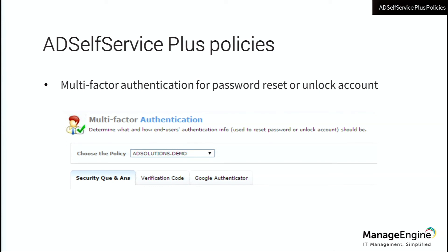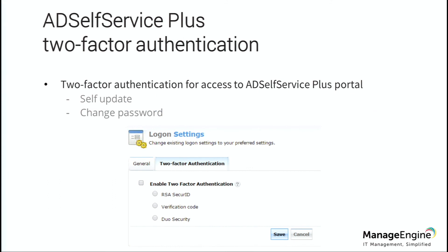This security is for password reset and unlock. If I'm going to allow the user, after they've logged into their machine, to go into the portal to gain access, we now have additional multi-factor authentication — brand new. This would be if they want to do a self-update or change their password. We're allowing RSA, verification code, SMS, email, and Duo Security. When are we going to merge them? Very soon — it's on the roadmap. This will overlap at some point, but for now they're a little bit separate. At least we have them for security.